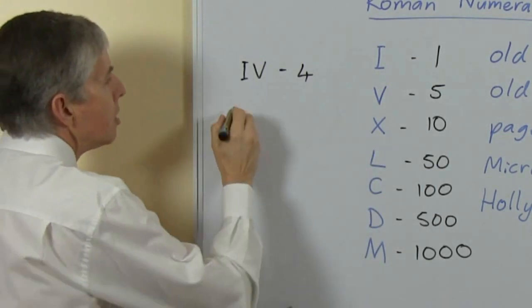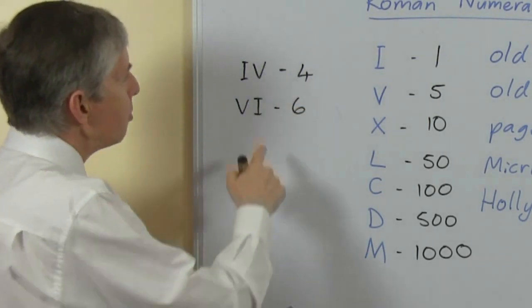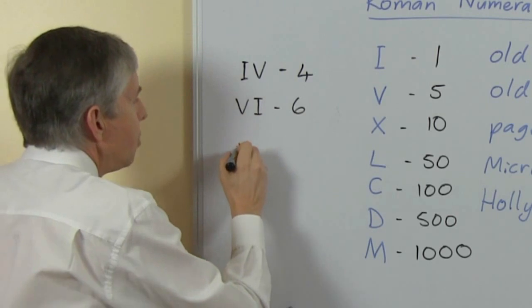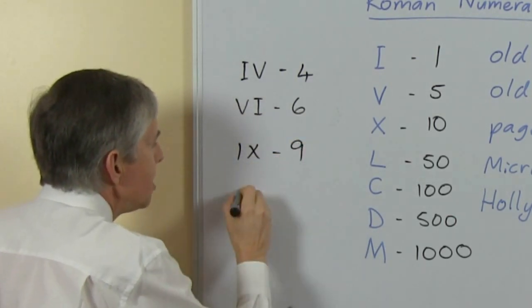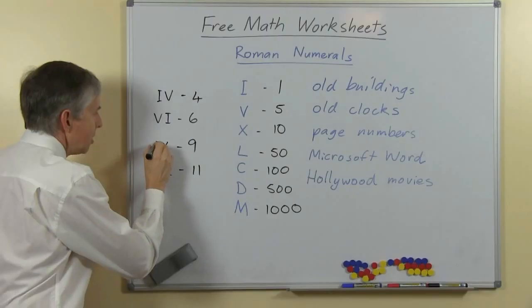So I'll just show you the symbol for 6 is the other way around, so you do have to be a bit careful because you might get those 2 confused. Here's 9 and here's 11, and that's the same idea.